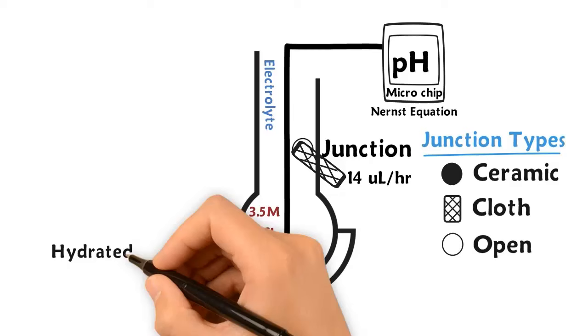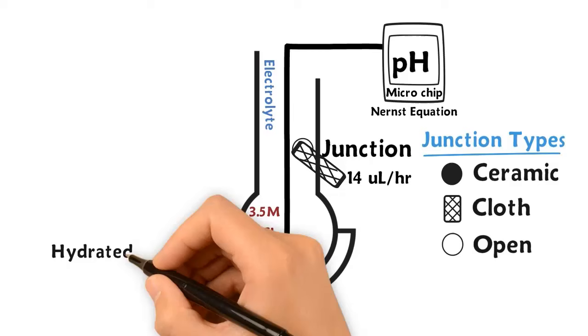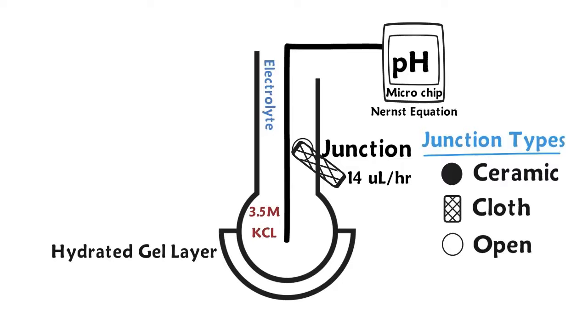On the bottom layer of the glass bulb, you have a gel layer that must be hydrated for proper use. You will have your glass bulb submerged in a testing or storage solution that will submerge the junction.